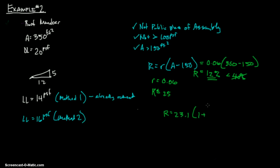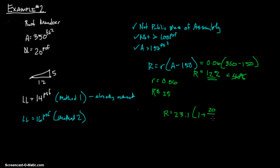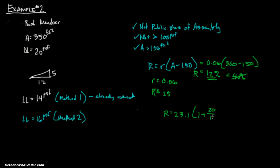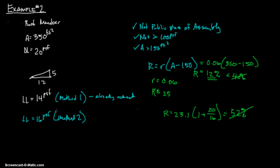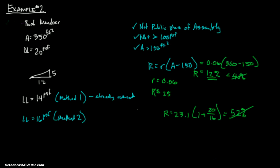1 plus D over L. Our dead load was 20. Our live load was 16. So that comes up with 23.1 times 1 plus 20 divided by 16. And we get 51. Let's just say 52. And 52 is way up there as well. So that's not going to control. What's going to control is this 12%.